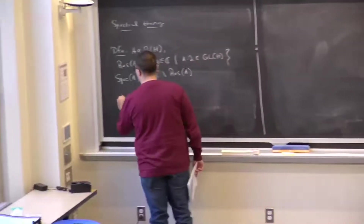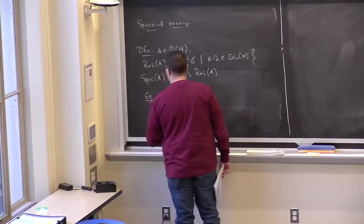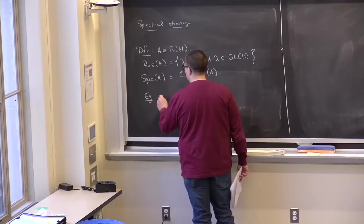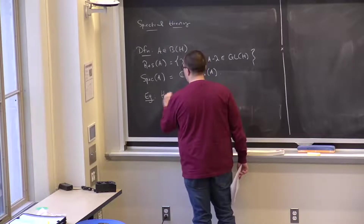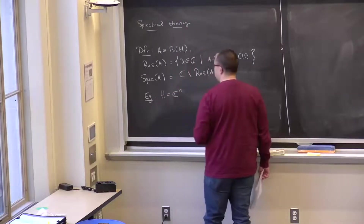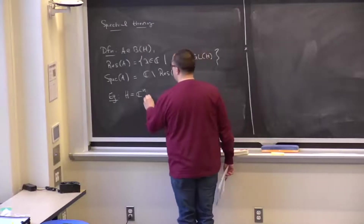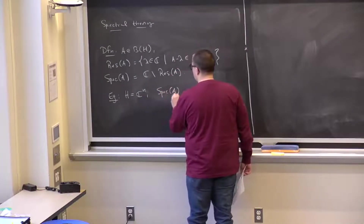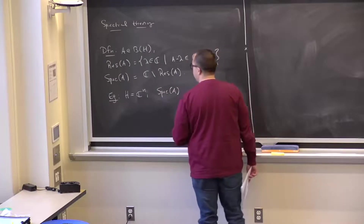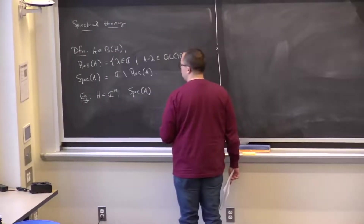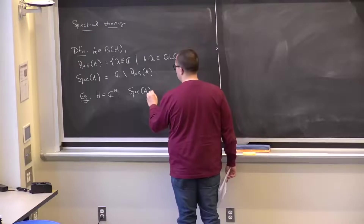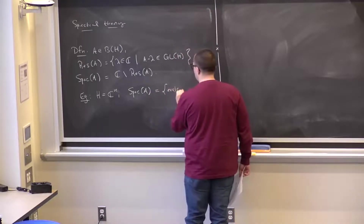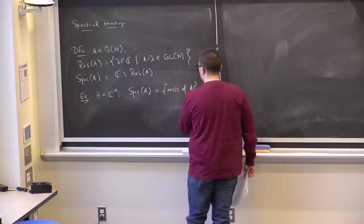From linear algebra, if H is ℂⁿ and A is a matrix on ℂⁿ or ℝⁿ, then the spectrum is simply the set of eigenvalues of A.